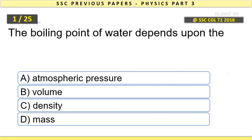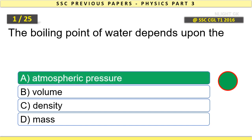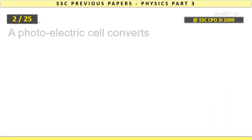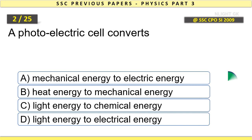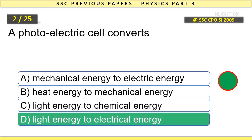The boiling point of water depends upon the atmospheric pressure. A photoelectric cell converts light energy to electrical energy.